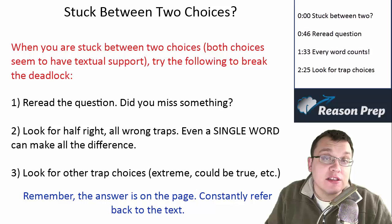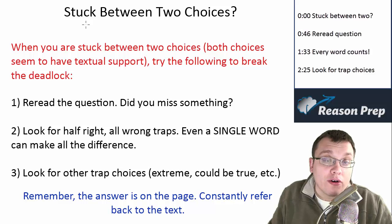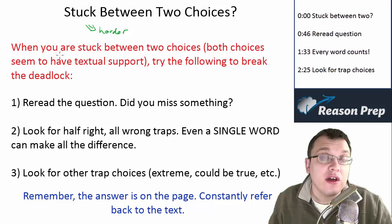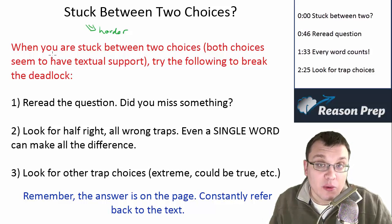This is something that happens a lot, especially on the harder questions. If you think about it, that's what's gonna make a question hard—that there's gonna be two choices that seem pretty similar, that both seem that they can fit with the passage, and then what's hard about it is deciding which of the two is best.